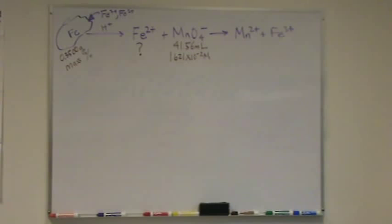A sample of iron ore weighs 0.3500 grams. The titration required 41.56 milliliters of permanganate solution, which is 1.621 times 10 to the minus 2 molar, to reach a light purple endpoint. Determine the mass percent of iron in the iron ore.